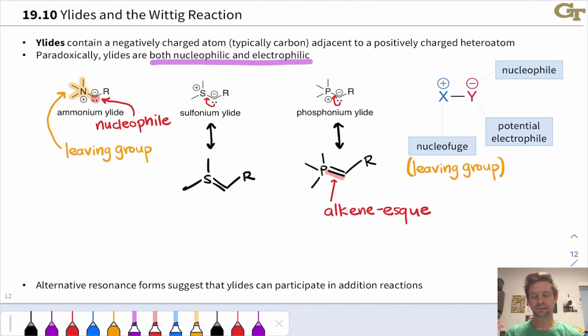Similar electron flow is involved here to generate that C=P double bond. And so these ylides are sort of alkene-esque in a way. They've got some double bond character, not a ton, but some, between carbon and the heteroatom. So they're alkene-esque, and this suggests that they can participate in addition reactions. And this is the essence of the Wittig reaction: addition of a phosphonium ylide to a ketone or aldehyde, leading ultimately to an alkene and a phosphine oxide. The oxygen in the carbonyl group ends up linked to phosphorus, which forms very, very strong bonds to oxygen.